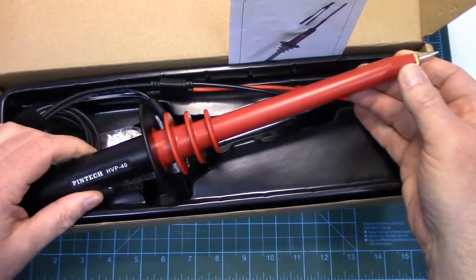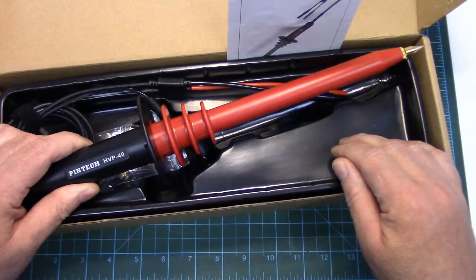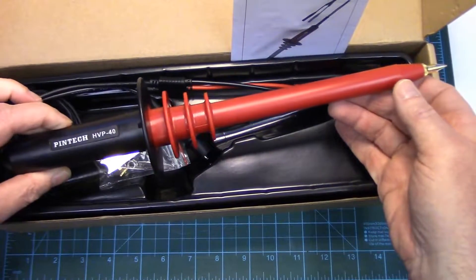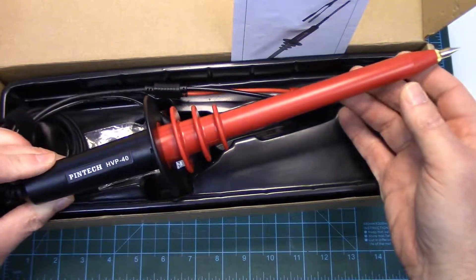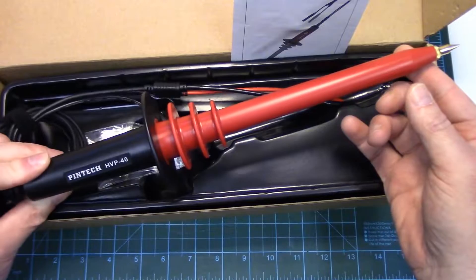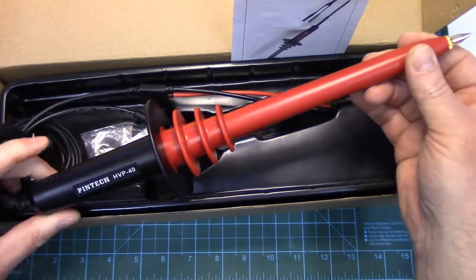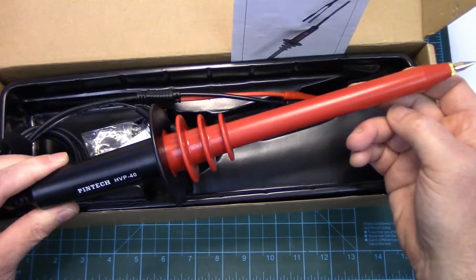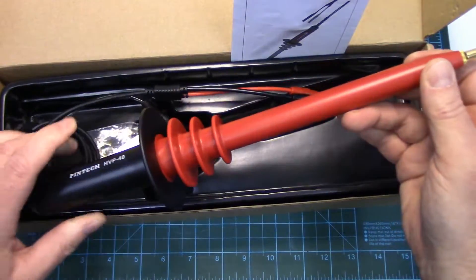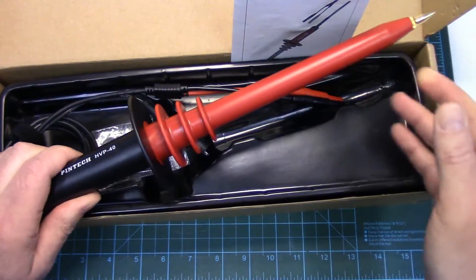It gets really good reviews and it's a decent price. You know, they're all under $100 and if you know anything about high voltage probes, if you've been looking at them for a while, you can see right off the bat this one's pretty much copied off of the popular Fluke 80K40. Same type of design, same type of voltage range.